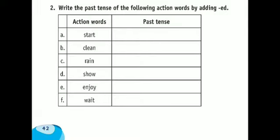Now write the past tense of the following action words by adding -ed. Start → started. Clean → cleaned. Rain → rained — R-A-I-N-E-D. Show → showed — S-H-O-W-E-D. Enjoy → enjoyed — E-N-J-O-Y-E-D. Wait → waited — W-A-I-T-E-D.